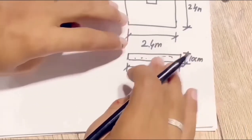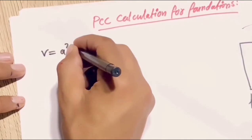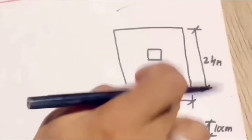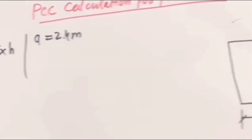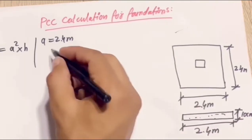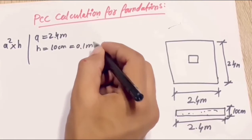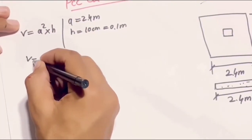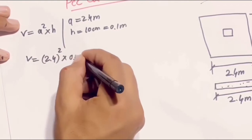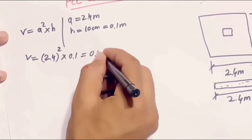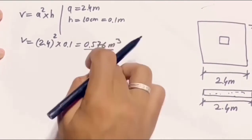Now we will calculate the PCC for the foundations. We know the volume formula for the foundation is A² × h. Here A is both sides of the square foundation, which is 2.4 meters, and h is the height of the PCC, which is 10 centimeters or 0.1 meters. Putting this value in the formula: 2.4² × 0.1 = 0.576 cubic meters. This is the quantity for one foundation.